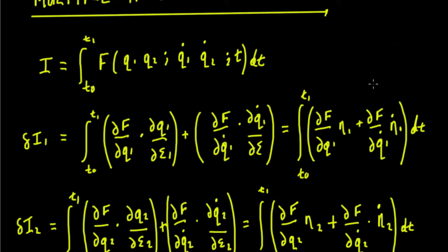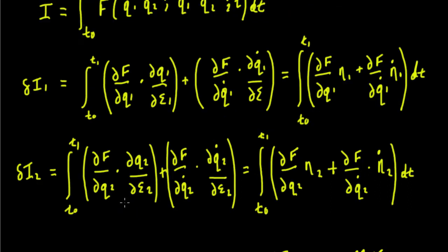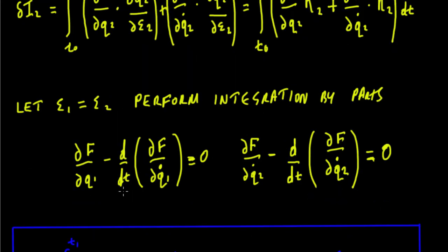So we can do the same again for our second independent variable, which is our q2. We'll just work through the exact same thing for q2, and then we go through the process of integration by parts.